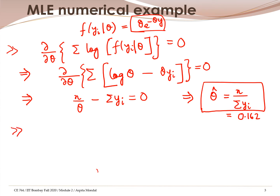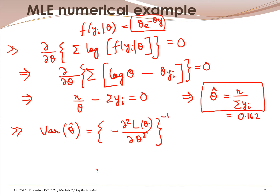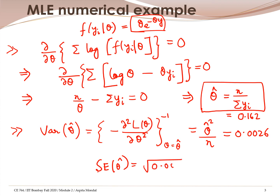The variance of theta hat is obtained by the second-order derivative: minus del² L(theta)/del theta², the inverse of that, evaluated at theta equal to theta hat. When we calculate the second-order derivative and plug in the value of theta hat, we get it as theta hat squared divided by n. Plugging in theta hat equal to 0.162, this comes out to be 0.0026. The standard error of the estimate is the square root of 0.0026, which is approximately 0.051.